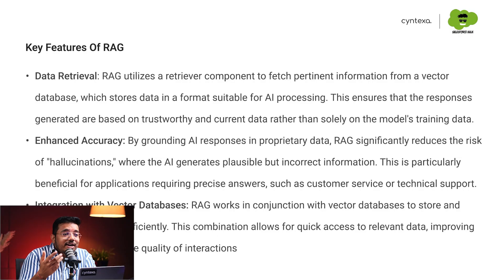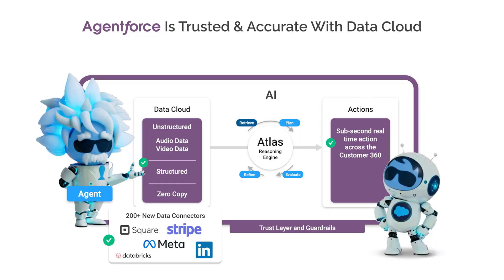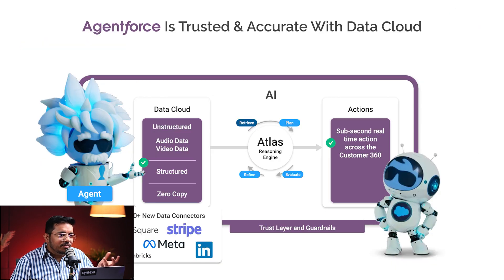Enhanced accuracy is achieved by grounding AI responses with the right data, which will definitely give us the right responses. We can also integrate with vector databases for RAG purposes. Next up, we have Agent Force and Data Cloud and how they are connected. Data Cloud is providing structured and unstructured data, audio, video data, and zero-copy capability. The Atlas Reasoning Engine retrieves the data, plans how to do certain actions, evaluates whether what it is doing is right, refines it, and follows the same process iteratively — all within milliseconds — with Customer 360 data available.